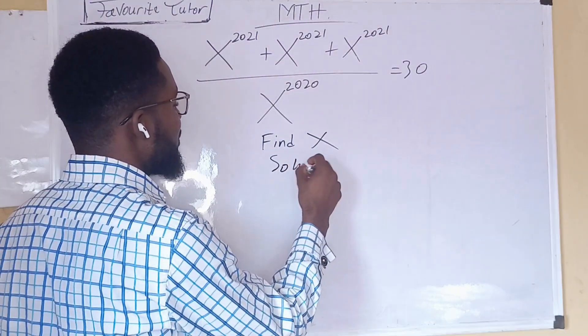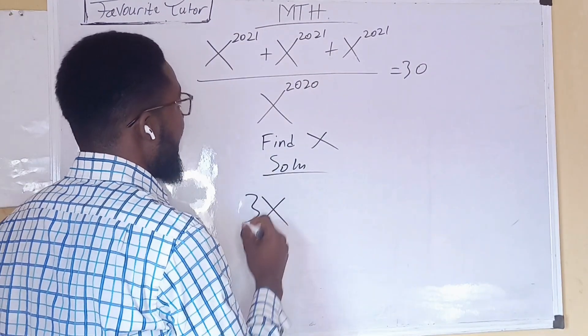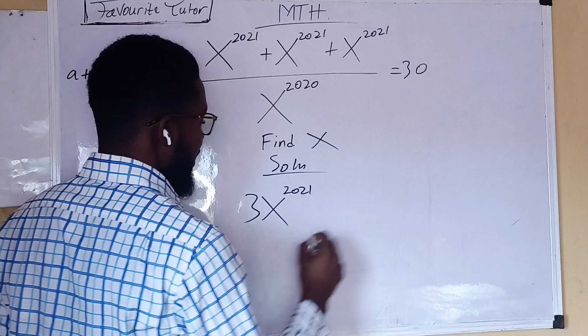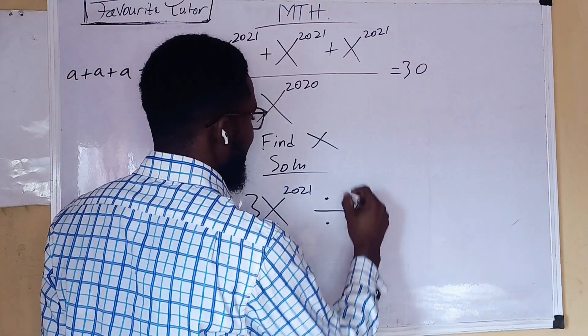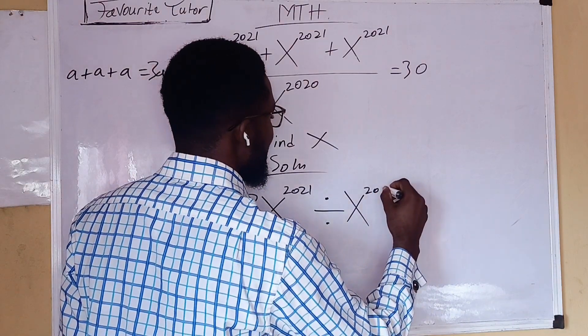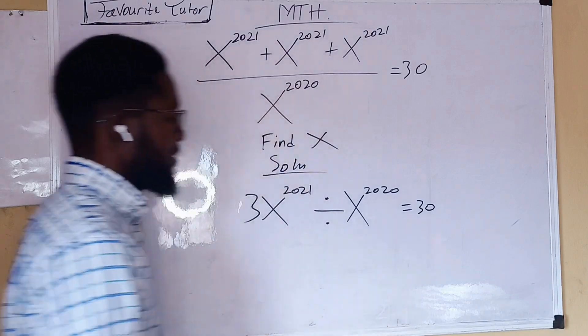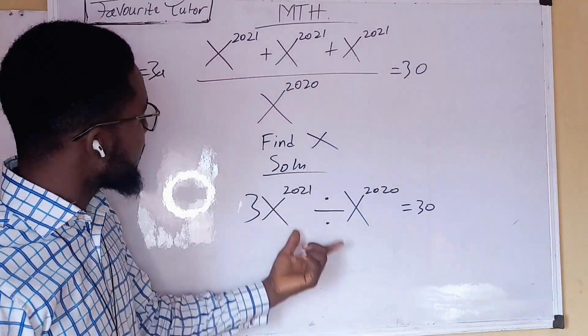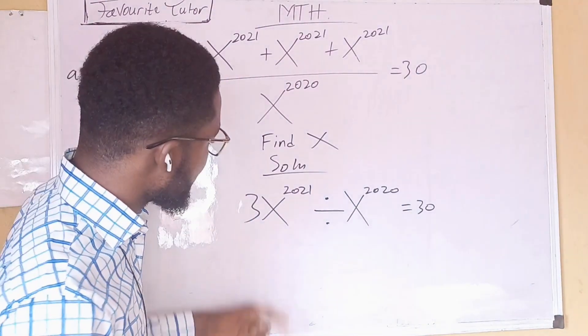First, we say solution. So what you are going to have here is 3x raised to the power of 2021 divided by x raised to the power of 2020 equals 30. This is actually the simplification of this. Let's continue.